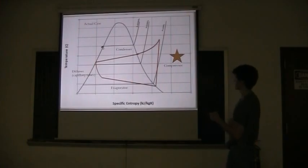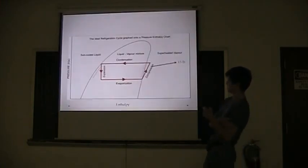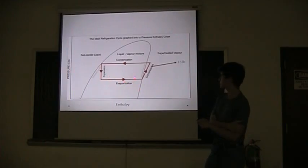So again the compressor. So this is the pressure enthalpy scale. And again your compressor is here. Condenser, expander, diffuser, and evaporator.